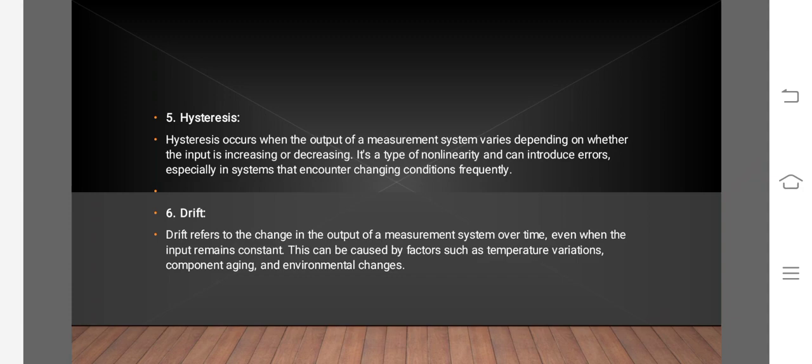Drift refers to the change in the output of a measurement system over time, even when the input remains constant. This can be caused by factors such as temperature variations, component aging, and environmental changes.